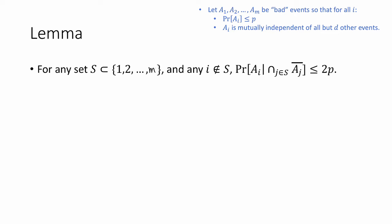In order to prove the first version of the Lovász Local Lemma, we'll first prove a helper lemma. It says the following. Assume the same setup as in the Lovász Local Lemma: we have m bad events, each of which occur with probability at most p, and which are mutually independent of all but d other events. Then this new lemma says: for any set S, a subset of 1 through m, and for any i not in S, the probability that ai occurs conditioned on none of the events in S occurring is at most 2 times p. If we could prove that, this will imply the Lovász Local Lemma.